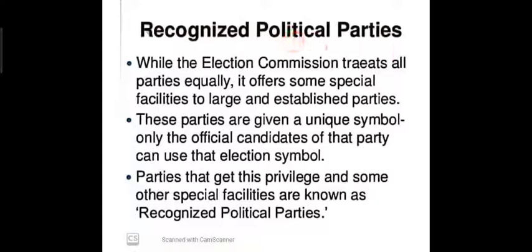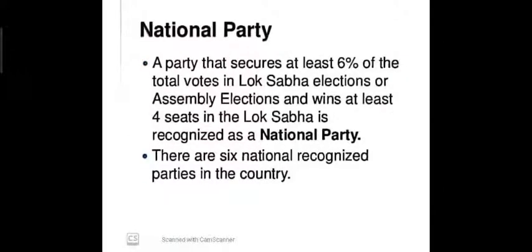While the Election Commission treats all parties equally, it offers some special facilities to large and established parties. These parties are given a unique symbol by the Election Commission only, and only the official candidate of that party can use that election symbol. Every party that gets this privilege and some other special facilities is known as a recognized political party. In our country there are two types of political parties: national party and state party.